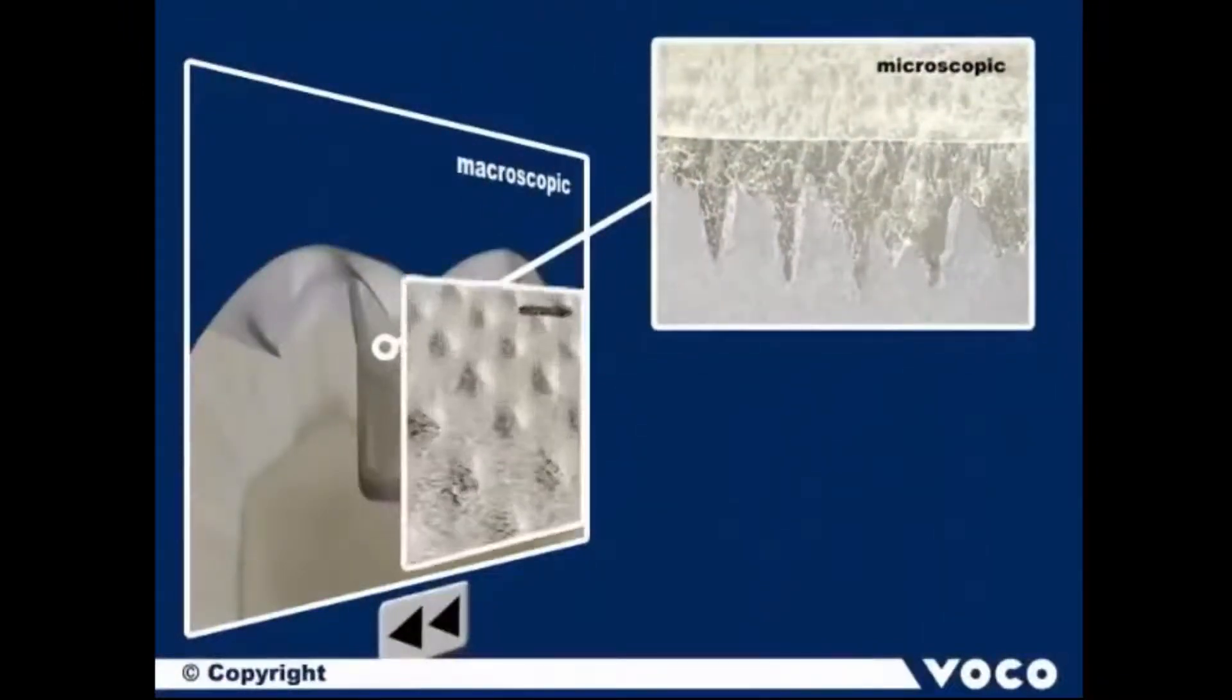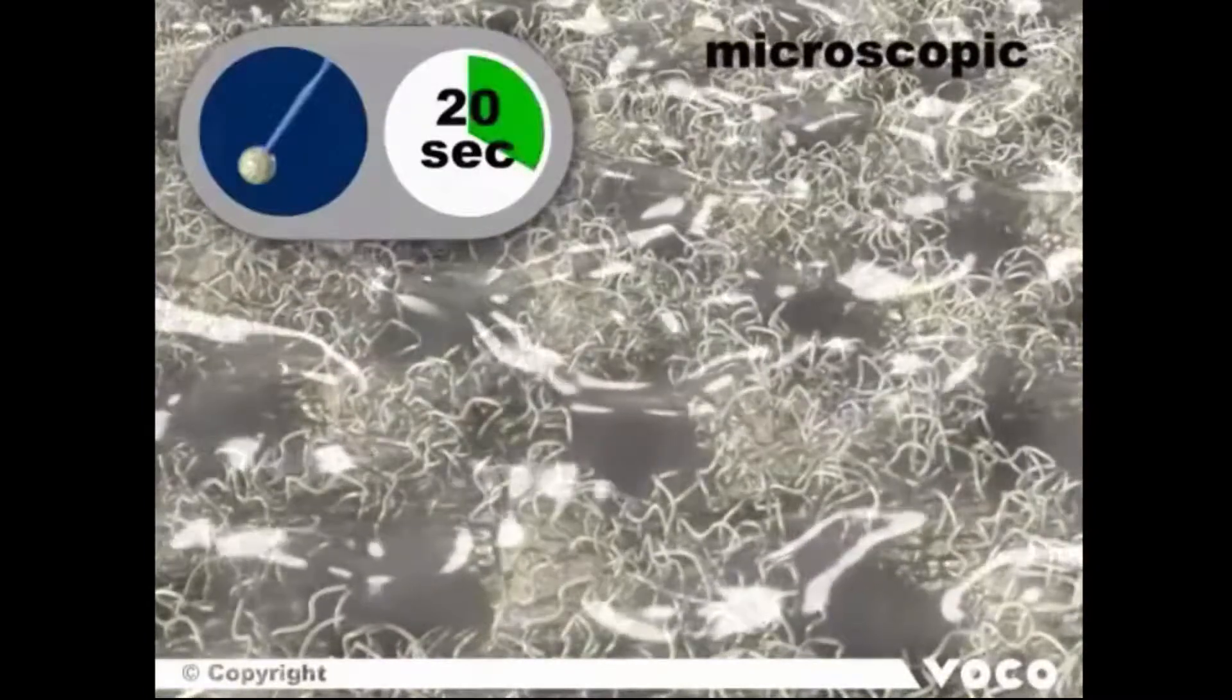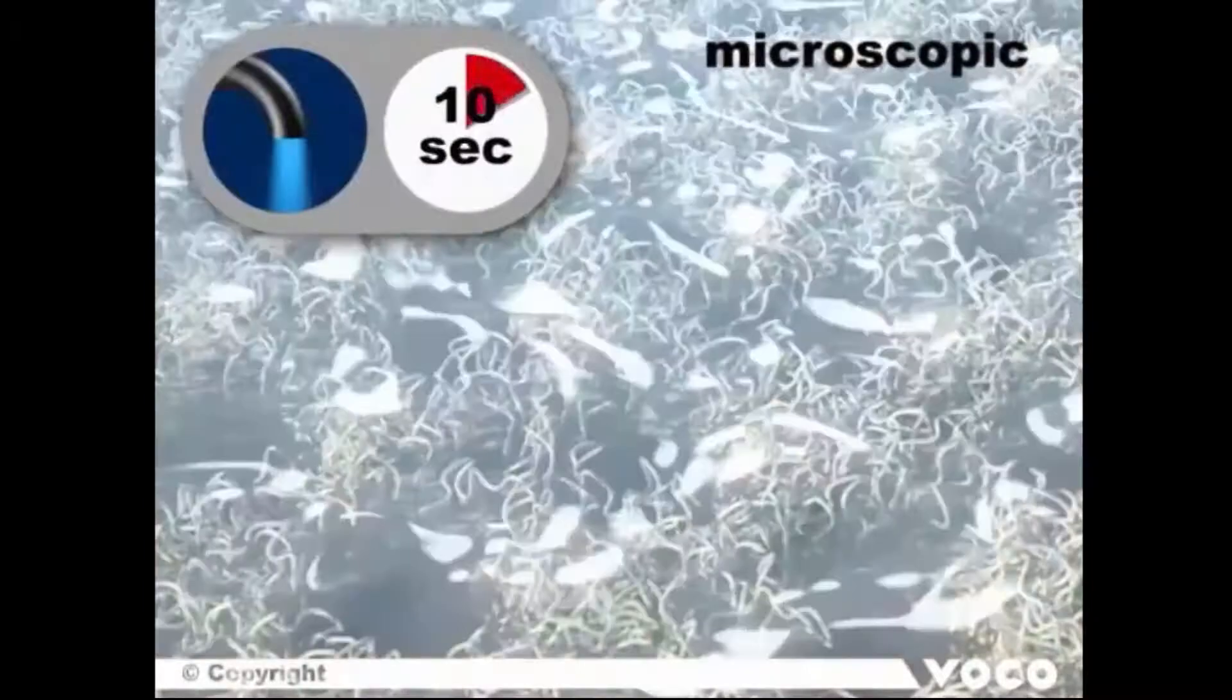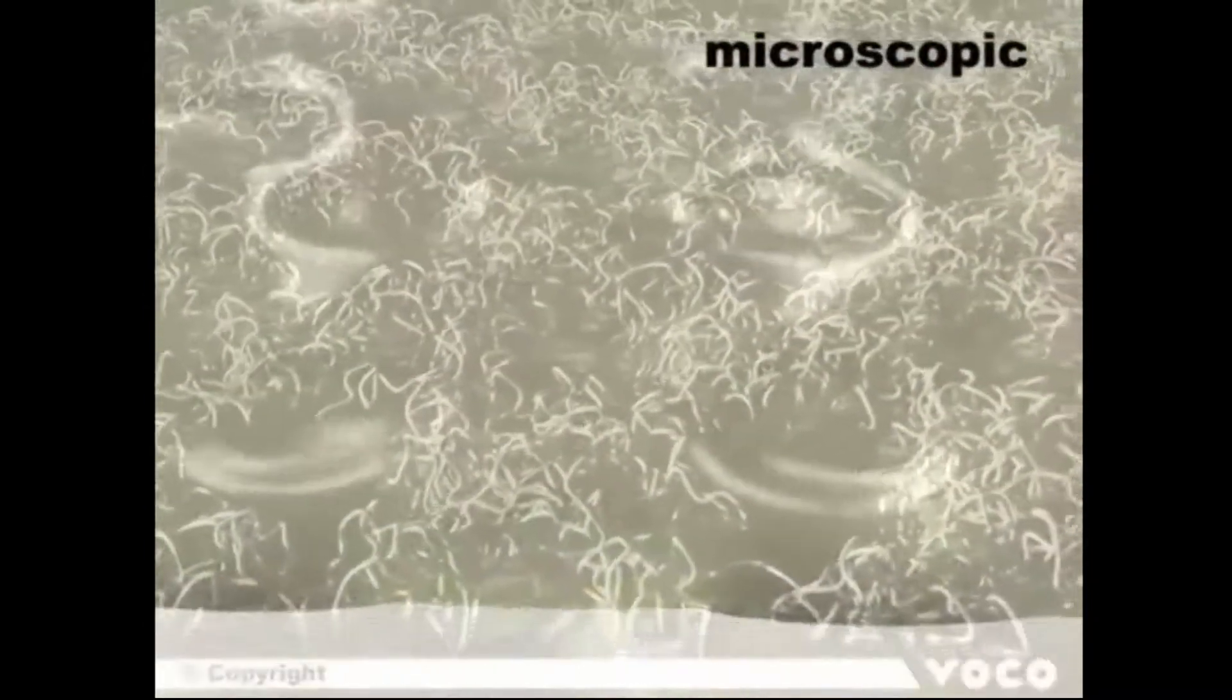The wetting of the dentin with the universal adhesive used in self-etch mode leads to some more complex reactions compared to enamel. During the initial acidic phase of the adhesive, the calcium on the outer surface of the tooth substance is dissolved. The dentin tubules are opened and the collagen fibers are exposed. The newly formed hybrid layer is now fixed by the gentle air drying of the solvent and light curing. Dentin tubules are reliably sealed by the adhesive which has penetrated them, creating dentin tags.